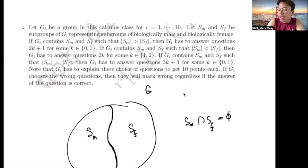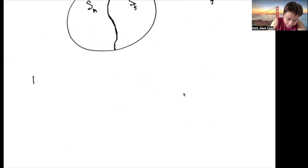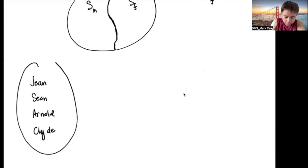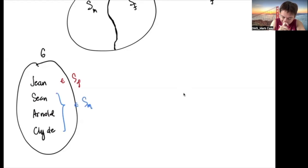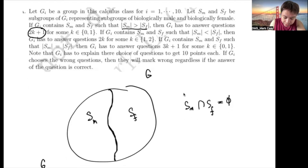Basically, the instruction is just for you to identify what type of questions you will be getting for this exam. For example, if we have names like Gene, Sean, Arnold, and Cried as elements of G_I, then Gene is in S_F because she is female, and the other three are in S_M because they are male. The cardinality of S_M is greater than S_F, so you pick questions 2K+1 for K from 0 to 1.